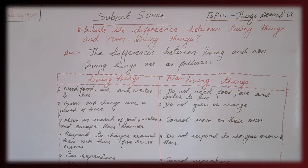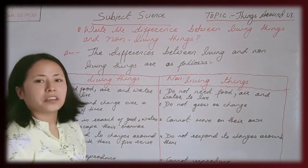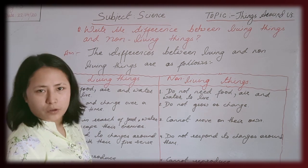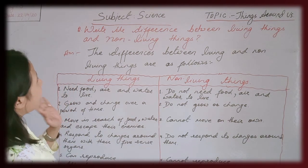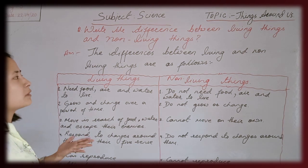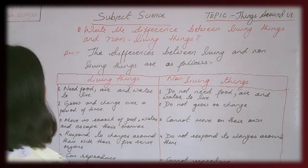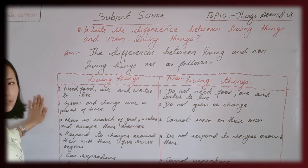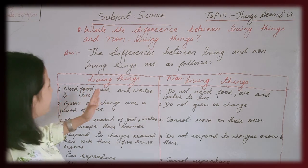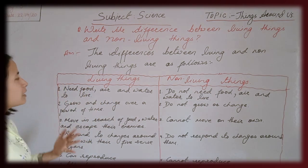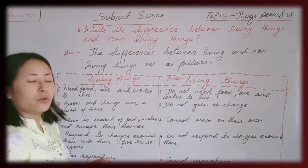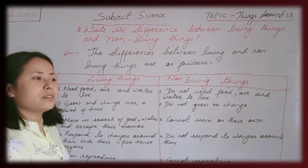Now children, we will see the differences between living things and non-living things. There are lots of differences between living things and non-living things. Number one: living things need food, air, and water to live. Whatever is a living thing needs many things to stay alive — for example, air, water, and food.